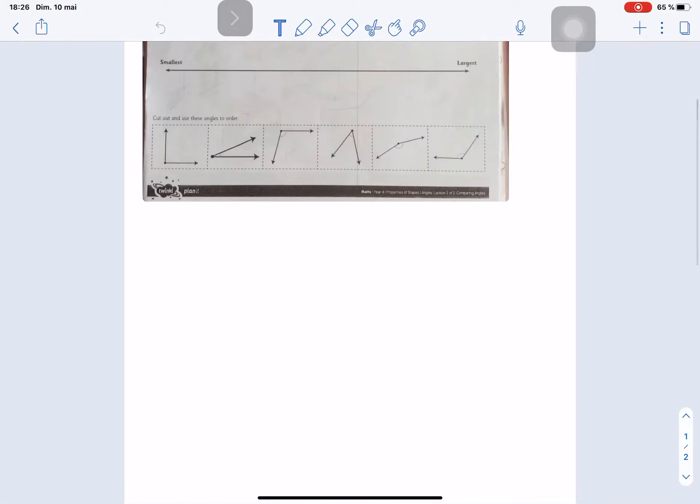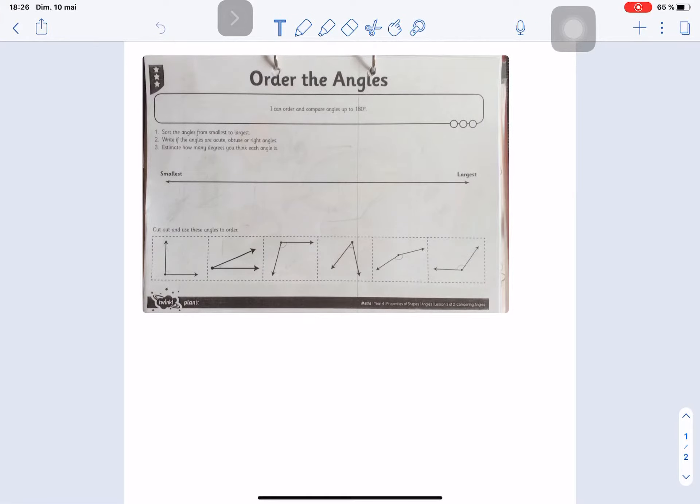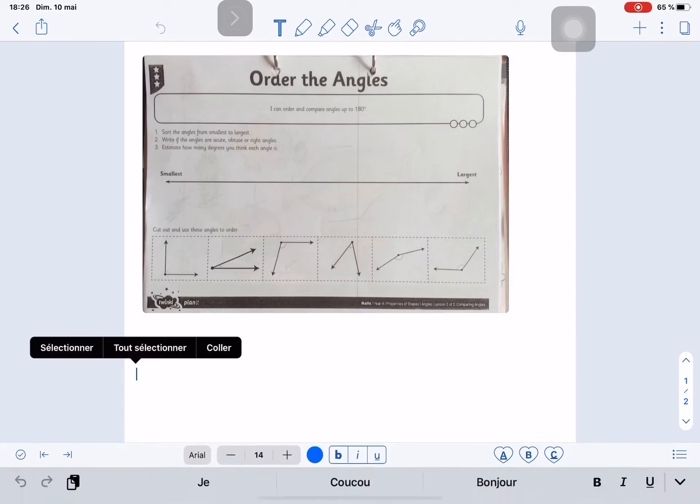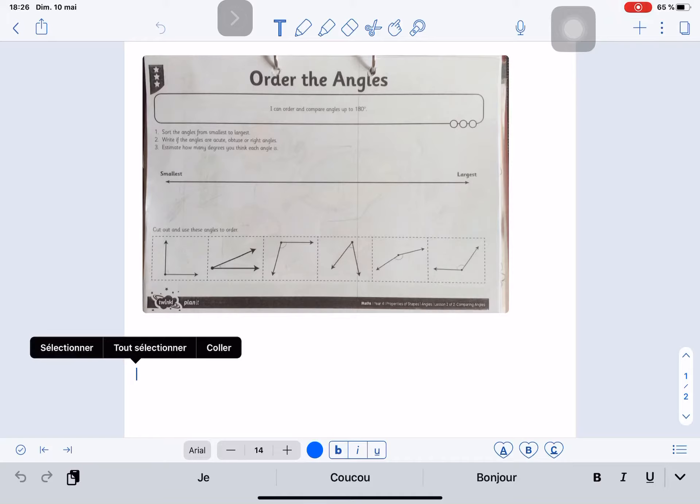So here is what the class has been given: a photocopy, a piece of paper of which the dyspraxic child will take a picture. This is a picture here in the Notability document, and the children are being asked to cut with their scissors the angles and to stick them with their glue stick along the line from the smallest to the largest angles. The dyspraxic child with the iPad and Notability will do all this work with his index fingers in this way.